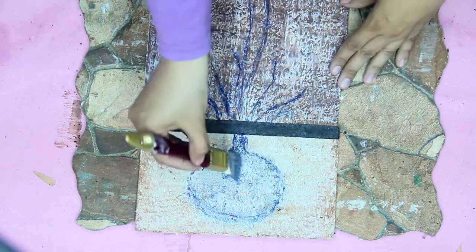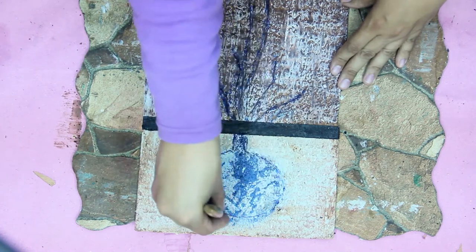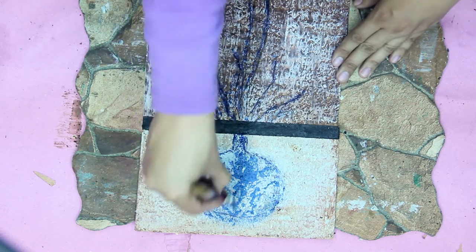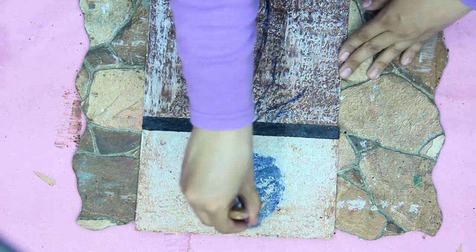Remove the excess with the towel. Add blue wax and start painting the final tree with it.